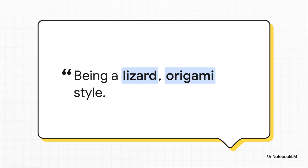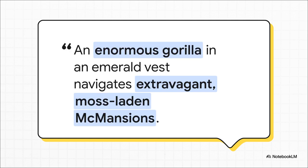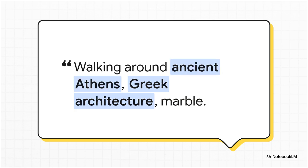It can also get really abstract and artistic. Here, you're not just looking at an origami lizard — you are the origami lizard, and you're moving through a world that's rendered in that exact same style. This shows you how flexible it can be. And then it can handle these incredibly detailed, whimsical scenes. The model understands the relationship between all these different things: the huge gorilla, his crazy vest, the over-the-top houses — and it builds a consistent world that makes sense of it all.